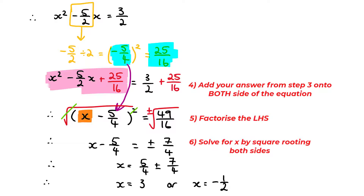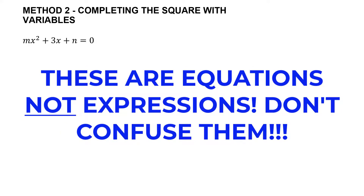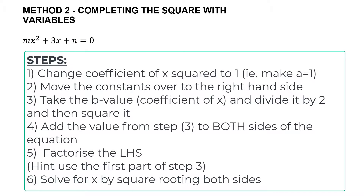Even though it was quite a long method, if you practice the steps over and over again you will be able to solve these questions in exams. The last example in this video is probably the most difficult kind of completing the square you'll encounter with equations, because some numbers have been replaced with letters or variables — m and n — which makes it more challenging. However, with six steps, if you follow them exactly as before, you'll arrive at the right answer regardless.